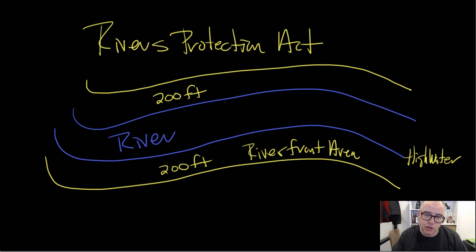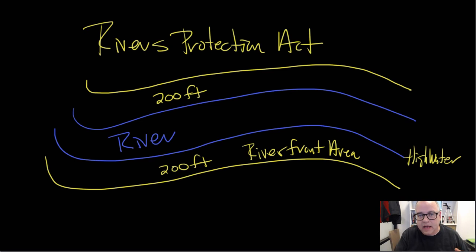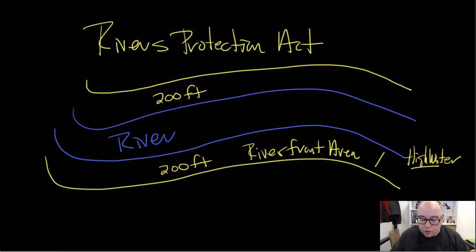For the Rivers Protection Act, it establishes a river as any flowing water that moves from one body of water to another on a yearly basis. It then creates a 200-foot area of protection on either side of that river or stream, measured from the high water mark of the river. So you have the high water mark, and then an additional 200 feet from that high water mark on each side — this is considered the riverfront area.